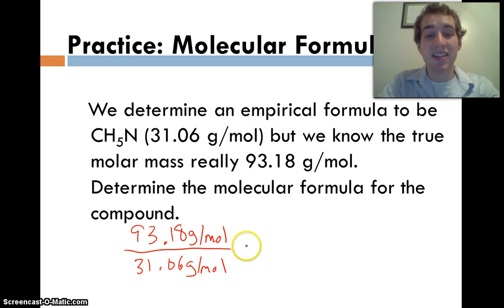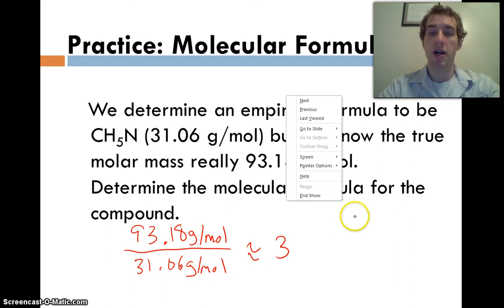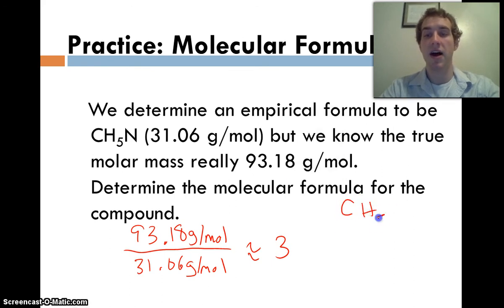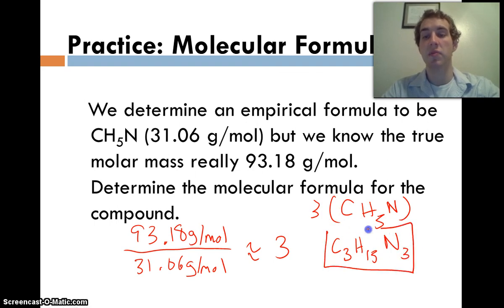And we're going to get a number. And in this case, it comes out very close to 3 again. That tells us that the molecular formula, the actual molecule, is 3 times bigger than our original empirical formula. So we're going to take that empirical formula, CH5N, and we're going to multiply it by 3. So it's going to become C3H3 times 5 is 15, N3. This would be the molecular formula.